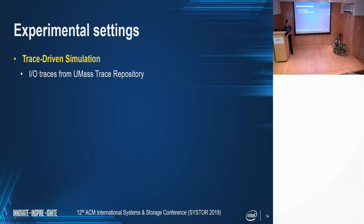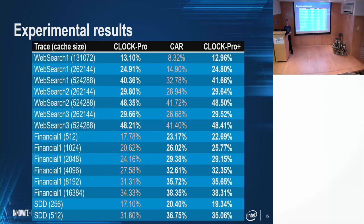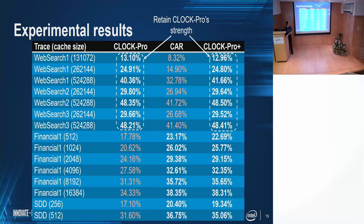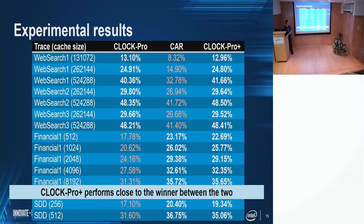Trace-driven simulation is performed to evaluate performance. We use I/O traces from the UMass trace repository. To investigate how well the policy adapts to LRU-friendly workloads, we also create a synthetic trace from a stack depth distribution. We vary the cache size and fix the shadow entry number to be the same as the cache entry. We perform a comparative study on hit ratios for CLOCK-Pro, CAR, and CLOCK-Pro Plus. Our new policy, CLOCK-Pro Plus, retains CLOCK-Pro's strength for worksurf traces, and at the same time overcomes CLOCK-Pro's weaknesses, bringing its performance close to CAR in the financial and SDD traces. That is to say, CLOCK-Pro Plus performs close to the winner between the two.